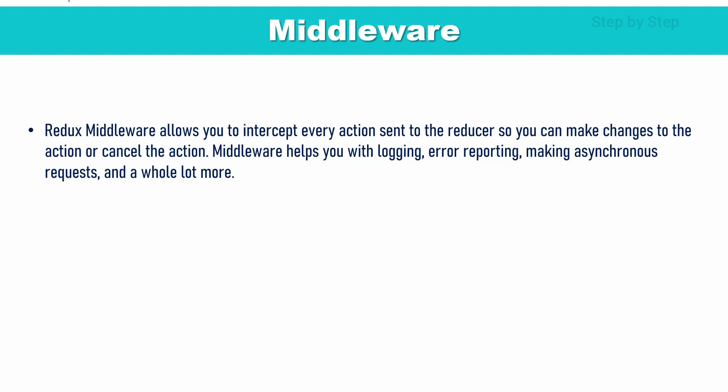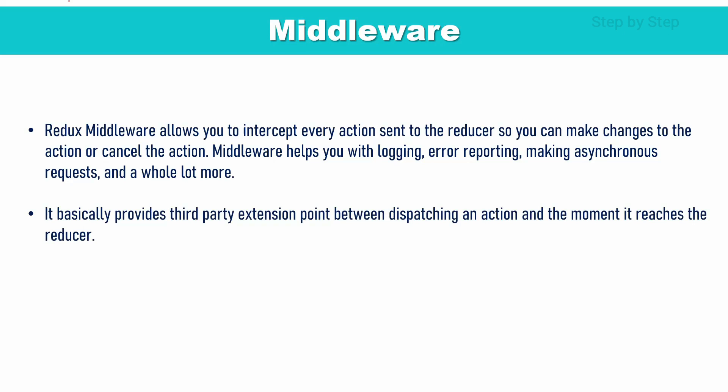It will be logging each and everything in a more precise and more clear way. When we use asynchronous data and when we get data from the API, this middleware is very useful — it will allow making asynchronous requests. It is basically a third-party extension point between dispatching an action and the moment it reaches the reducer. Third party means in between action and reducer, we will be having this middleware.